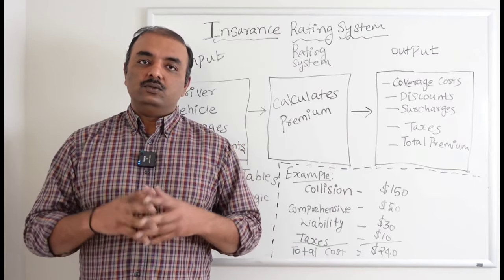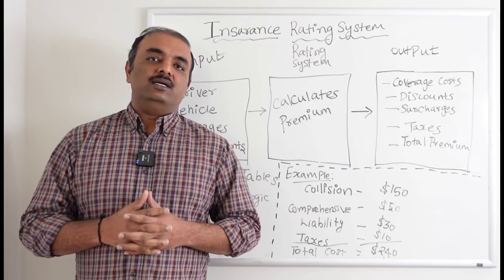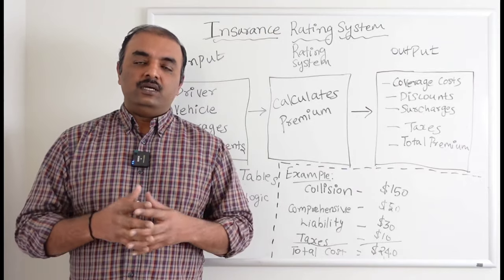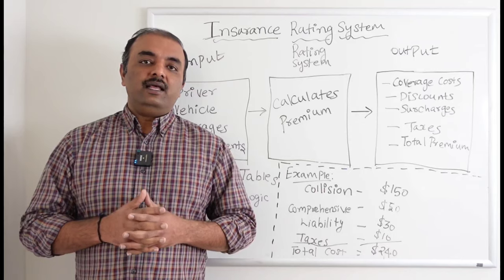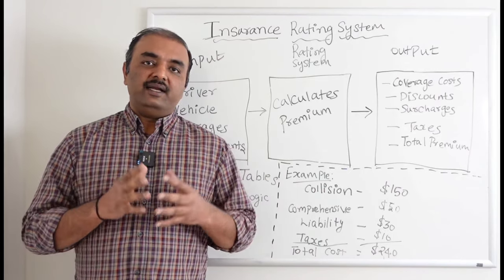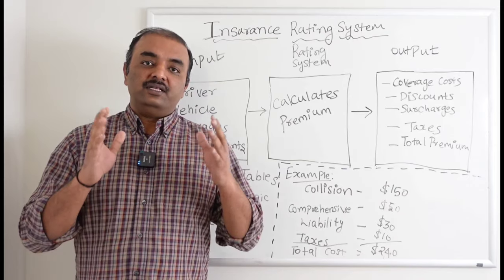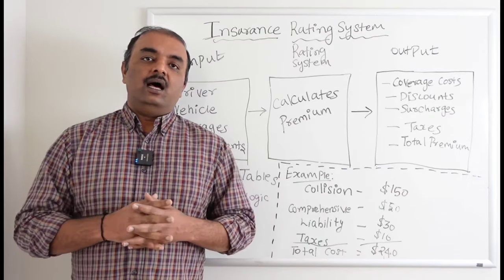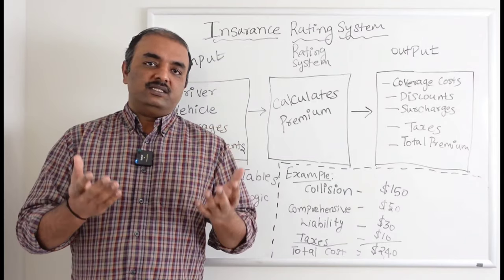You want a property and casualty personal auto insurance, so you go to your insurance carrier and they take your details like both the car details and the driver details, and what are the kind of coverages you need like collision, comprehensive, etc. And then if you want endorsements, they add the endorsements.